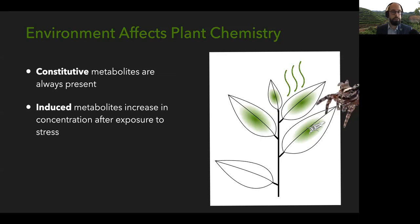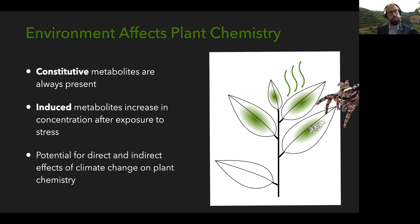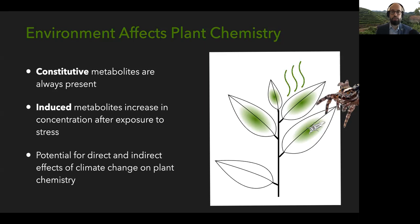Plants can also produce volatile compounds that carry information about an attack to neighboring organisms, such as predators like jumping spiders, which are one of the main predators of tea green leafhoppers. The environment has the potential to change plant chemistry — either through the direct impacts of climate change like drought stress and heat waves, or through indirect effects via changes in insect populations, which could lead plants to be in that induced state more often.